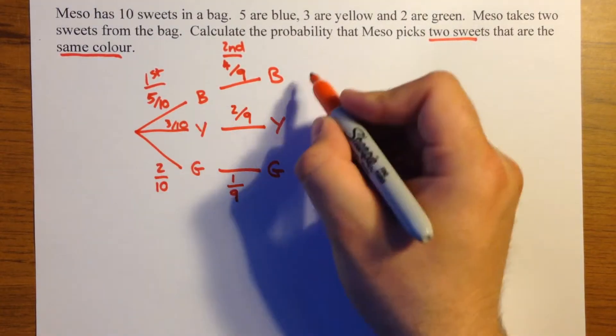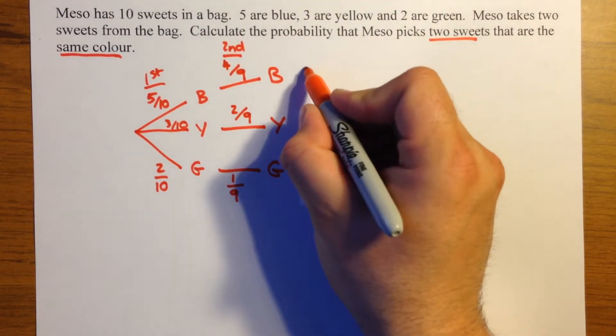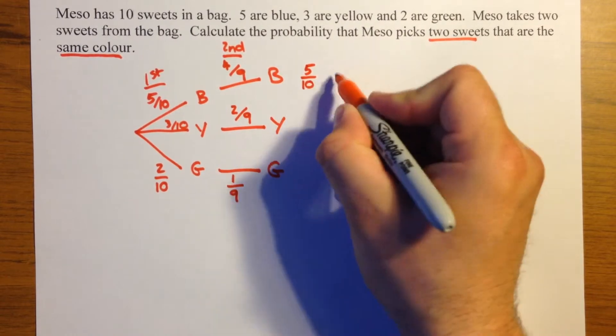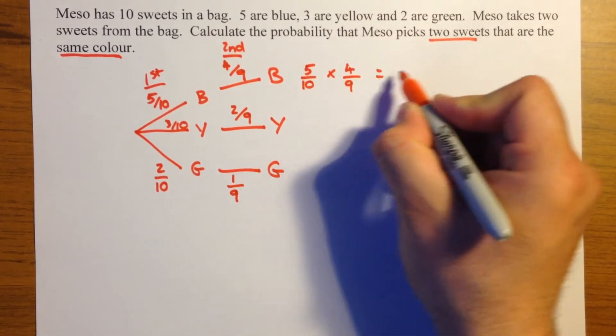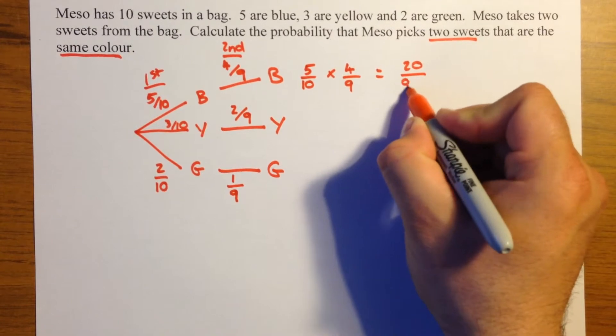So, we times along the lines, so for this combination, we've got five tenths times by four ninths, which is twenty ninetieths.